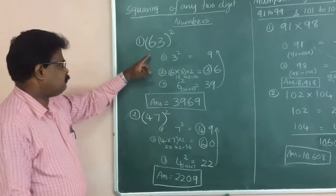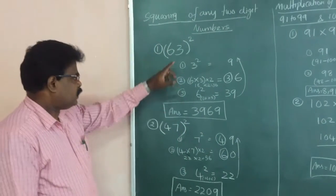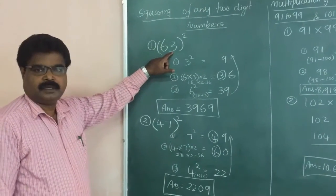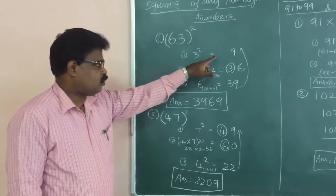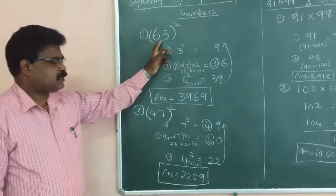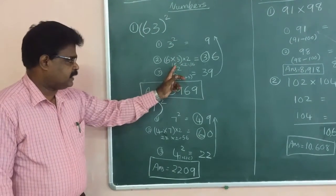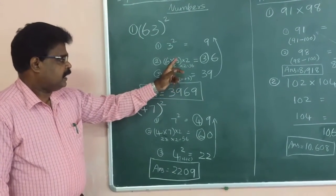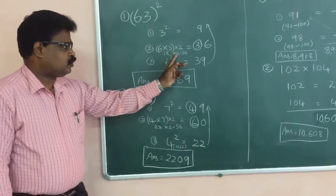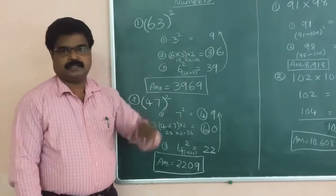Taking 63 squared as the first example. First, you square the units digit: 3 squared is equal to 9. Next, you multiply 6 into 3, that is equal to 18. Then multiply 18 by 2, that is equal to 36.